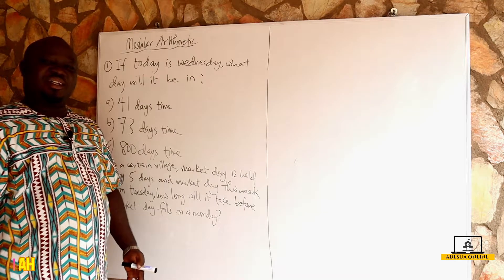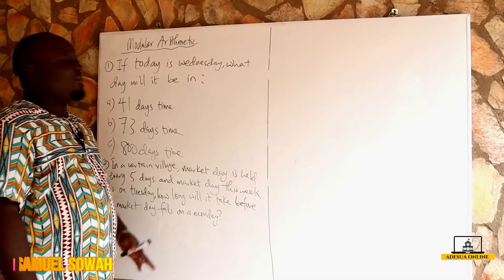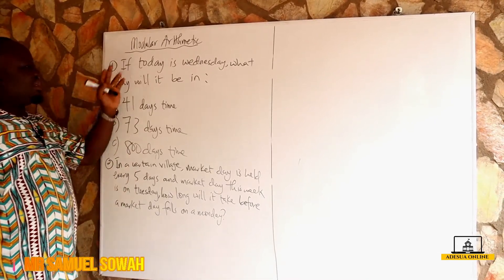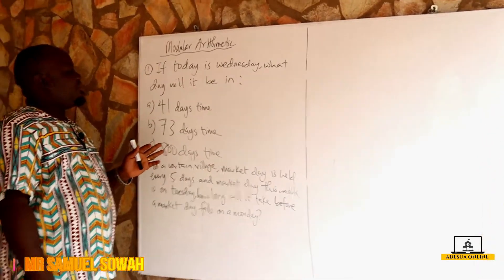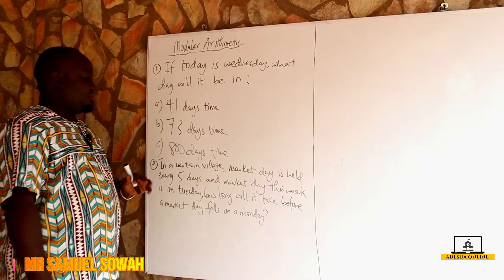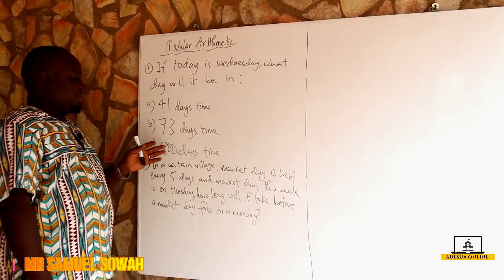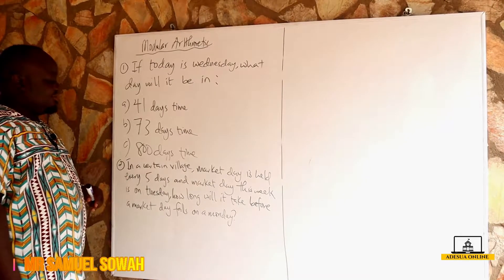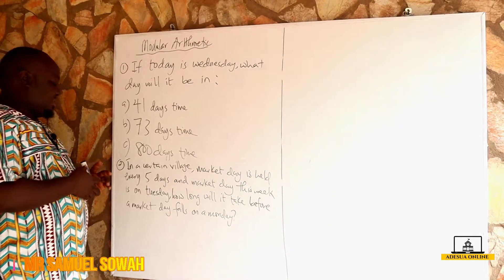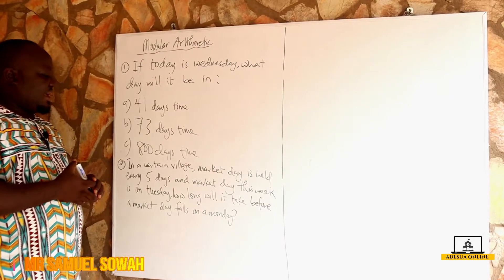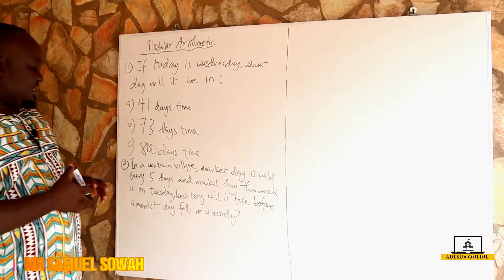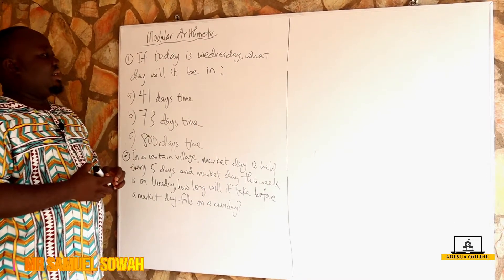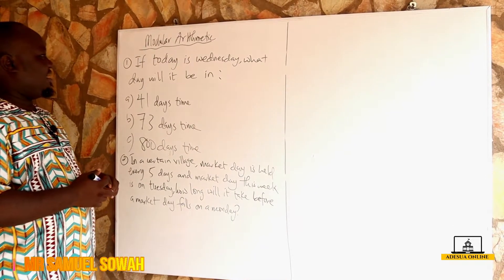We want to consider the class by solving some real life examples. If today is one day, what day will it be in 41 days time, 73 days time, and 800 days time? Our second question says: in a certain village, market day is held every five days, and market day this week is on Tuesday. How long will it take before the market day falls on a Monday?